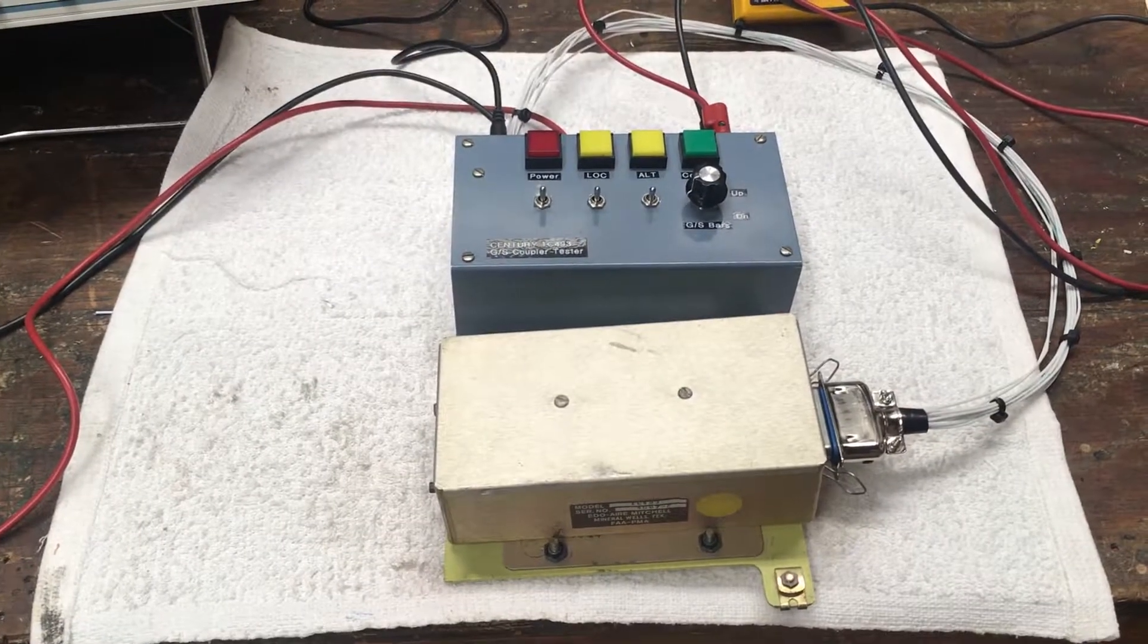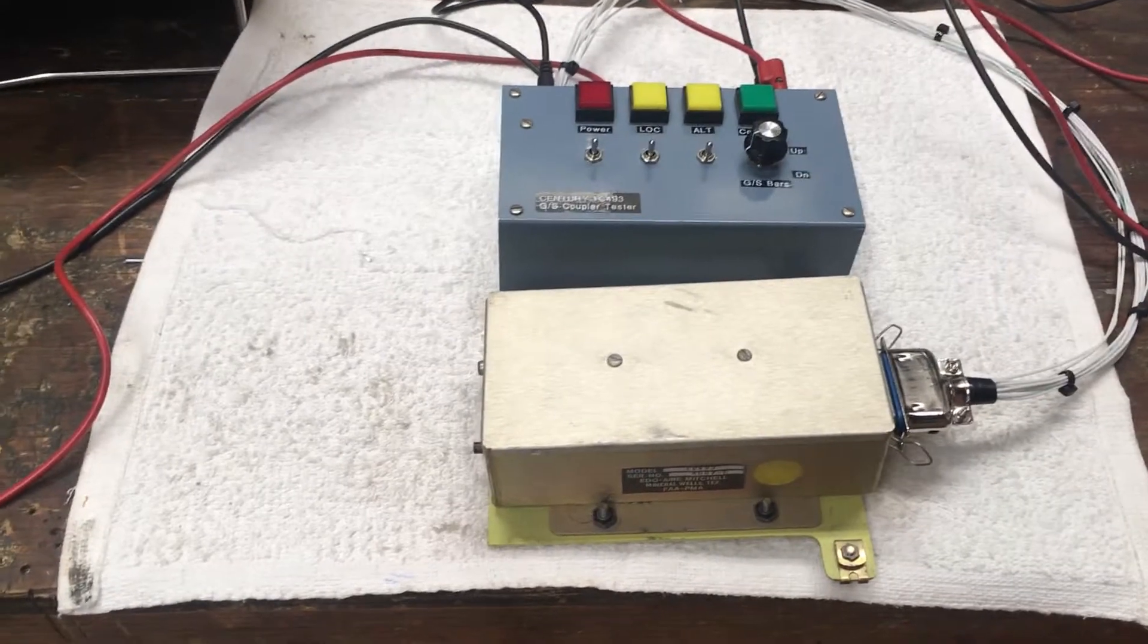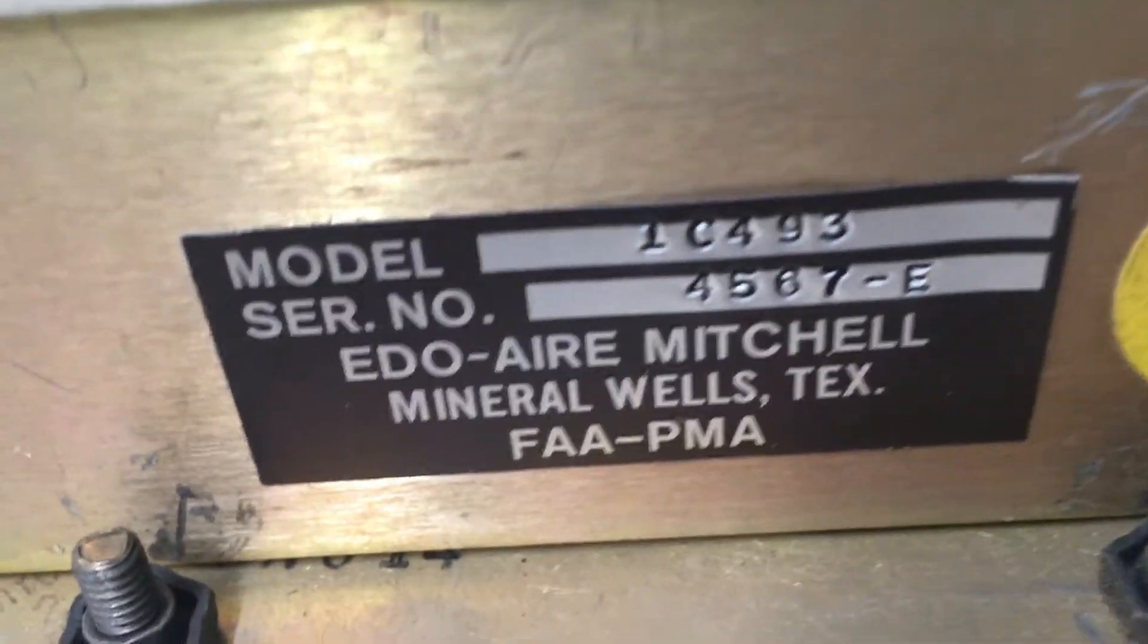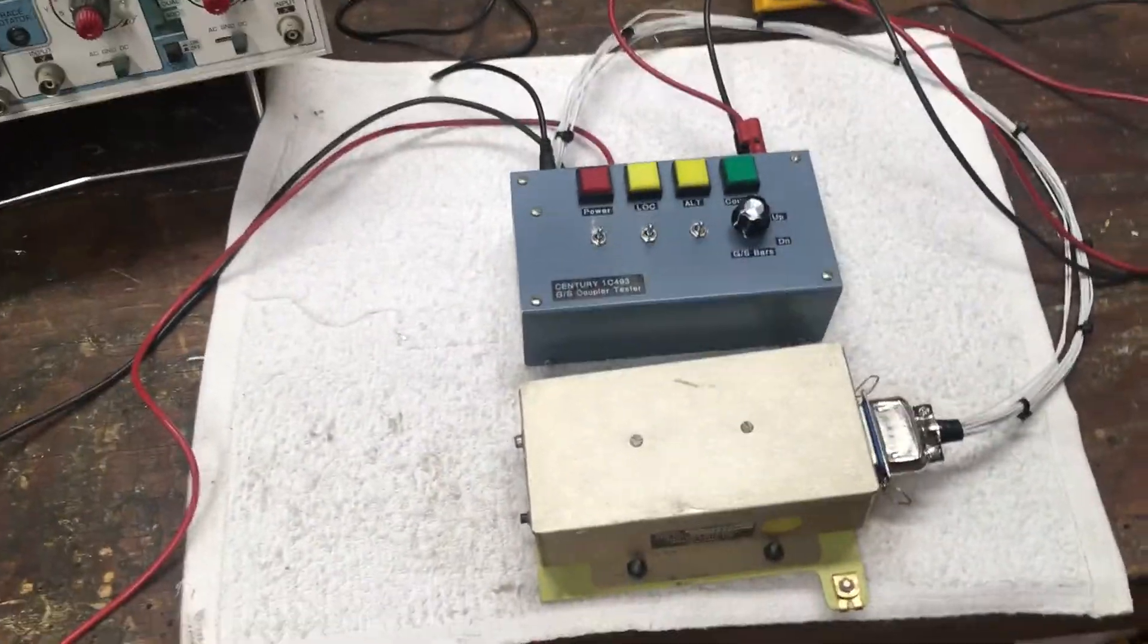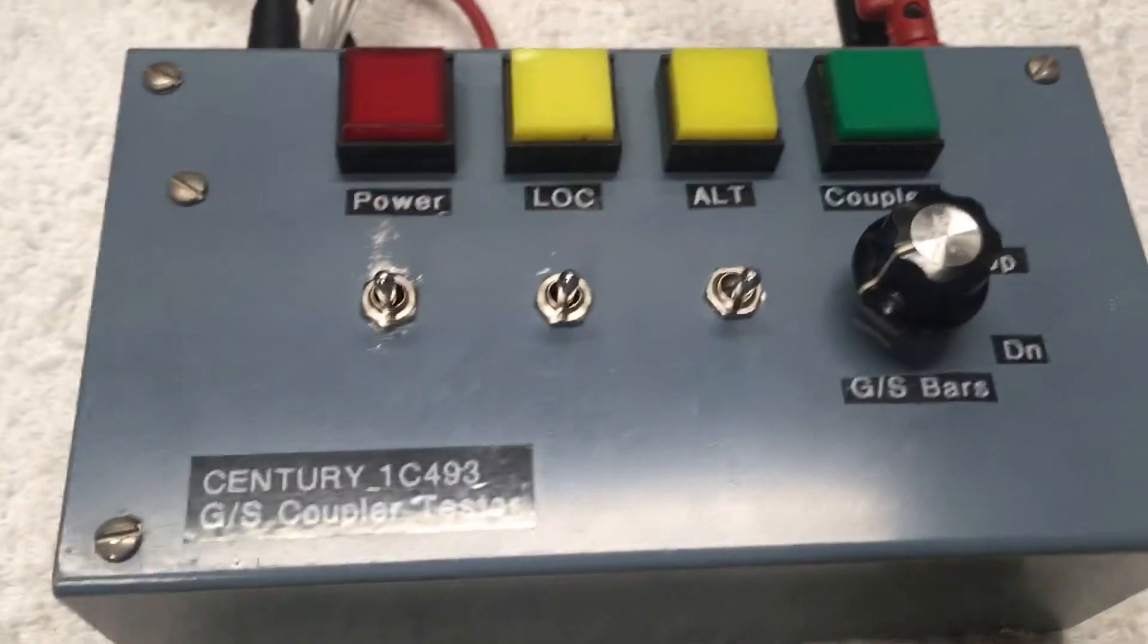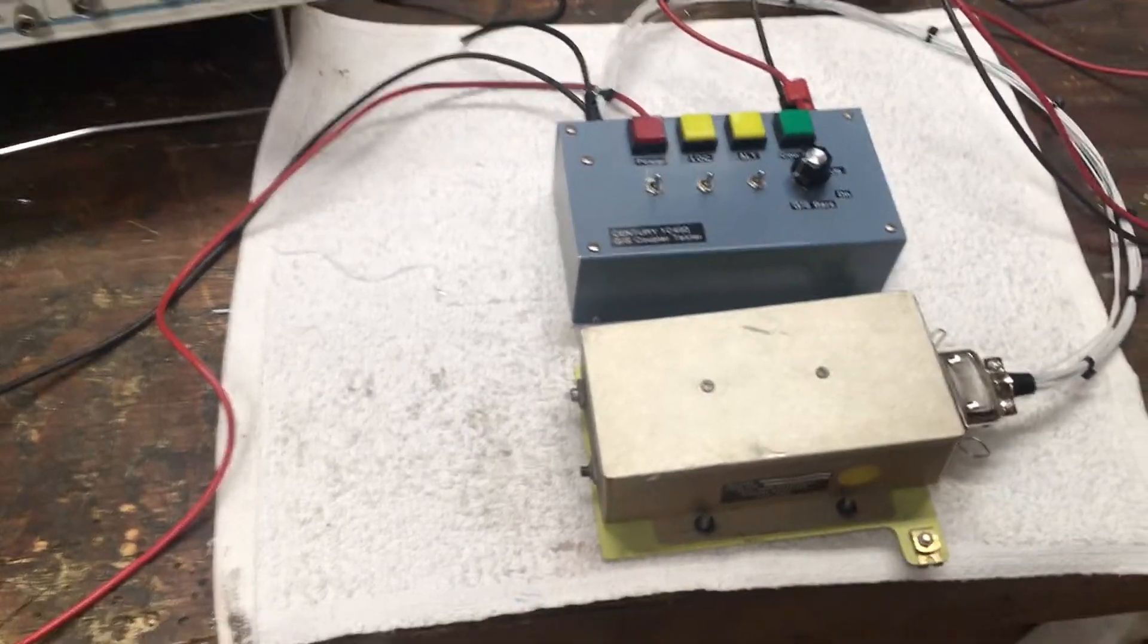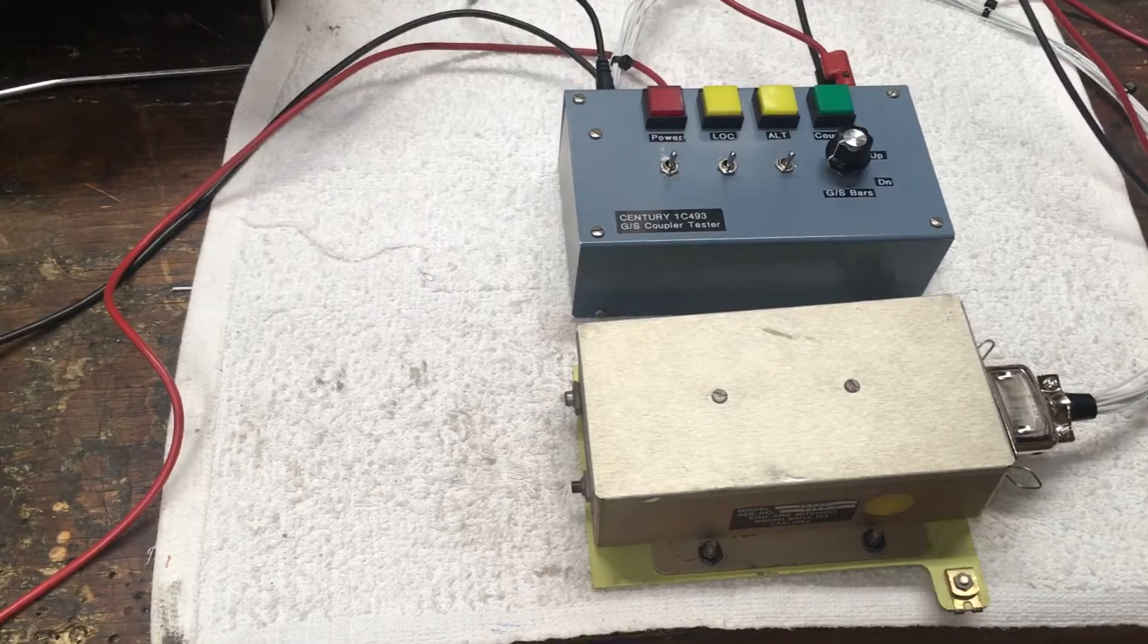Hey everyone, I've got a Century 3 autopilot with the optional glide slope coupler - this EDO Air Mitchell 1 Charlie 493 - that hasn't been working. After fiddling with a few things, I built this little tester so that I could simulate what the airplane does and see if it captures. That's the problem: it wasn't arming or capturing.